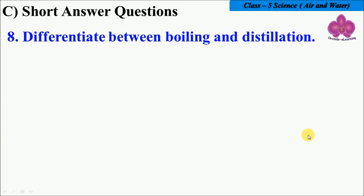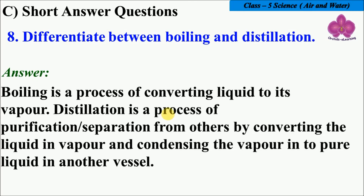Differentiate between boiling and distillation. Boiling is a process of converting liquid to its vapor. Distillation is a process of purification or separation by converting the liquid into vapor and condensing the vapor into a pure liquid in another vessel.